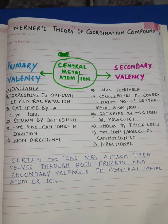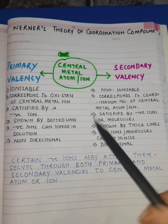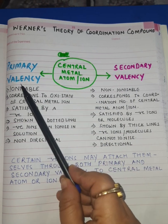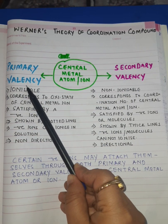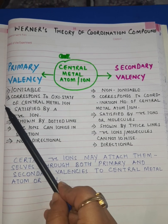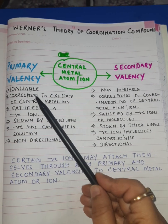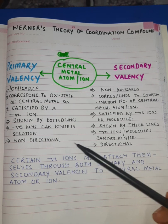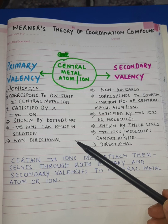The most important point in Werner's theory is about the central metal atom or ion. According to Werner's theory, the central metal atom or ion has got two valencies — one is primary valency and the other is secondary valency. Both have certain characteristics, so let us study them one by one.